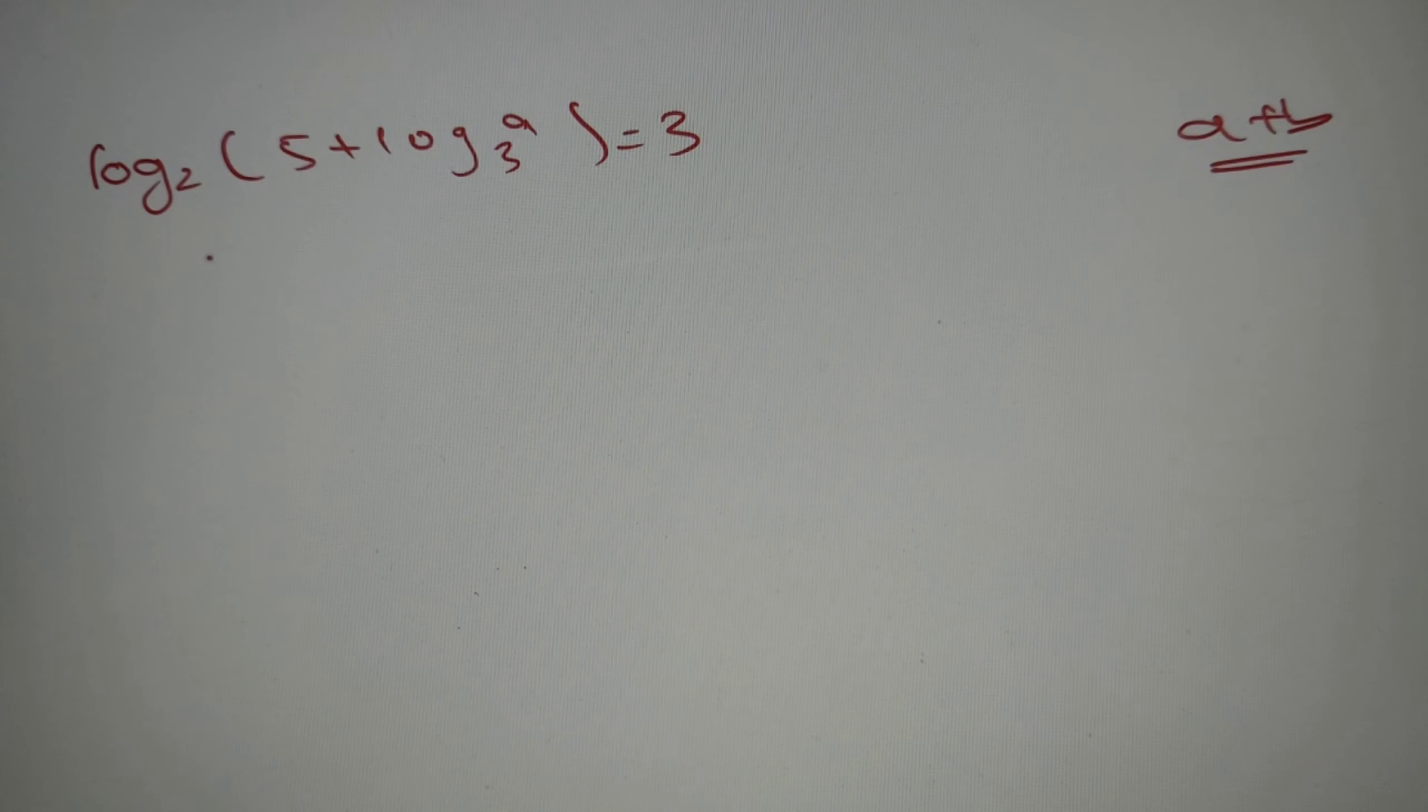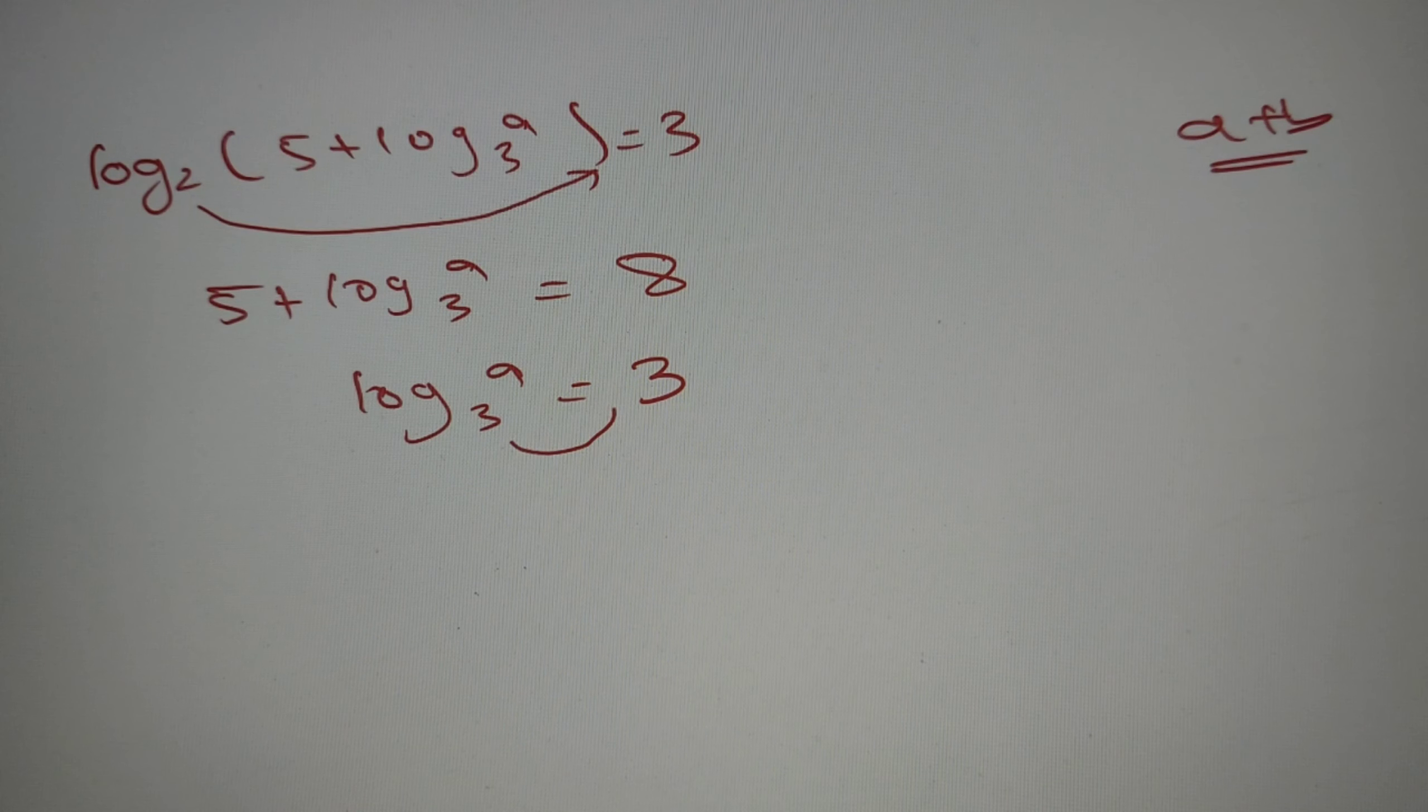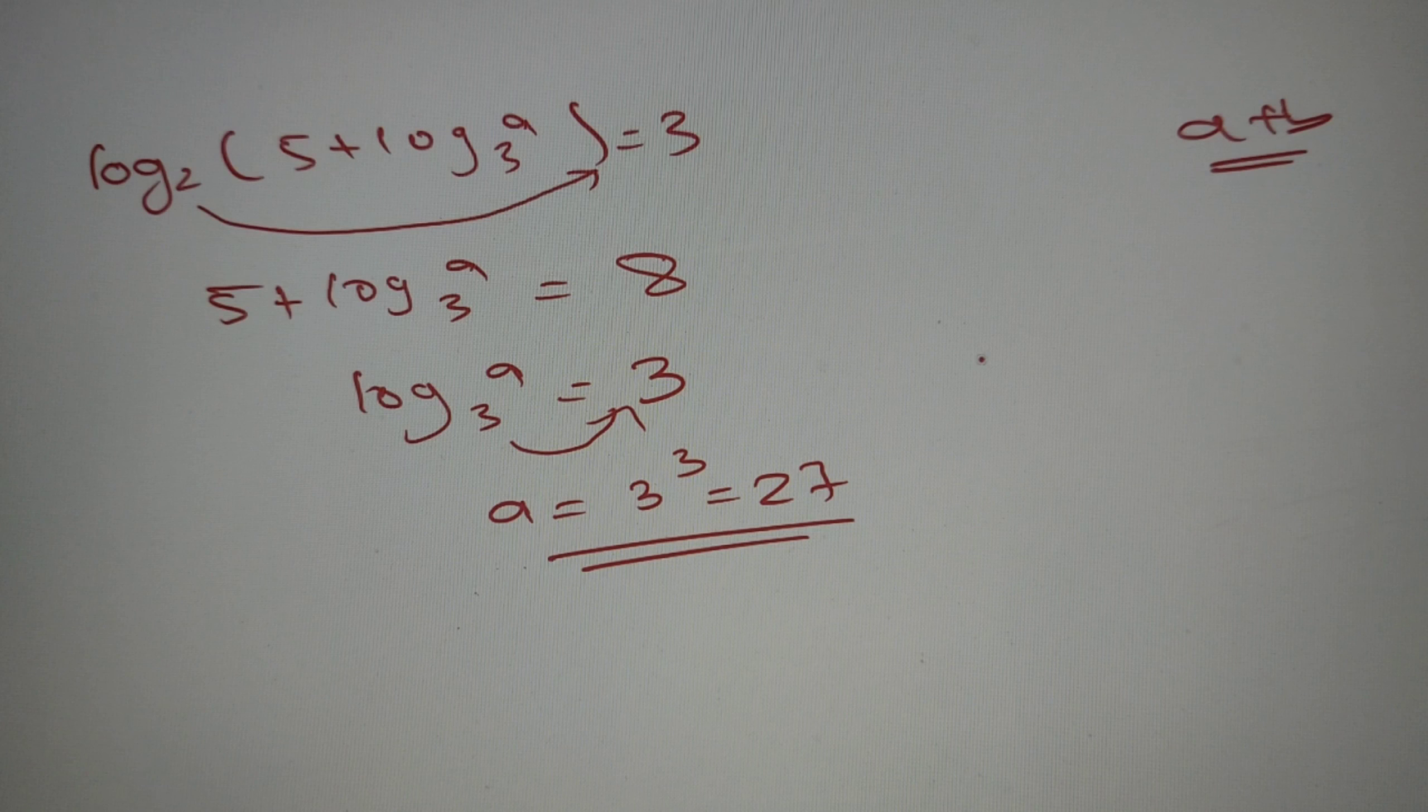If we solve this equation, we can say that 5 plus log base 3 of a equals 2 to the power 3, that is equal to 8. So we can say that log base 3 of a equals 8 minus 5, that is equal to 3, and again this 3 can go over here. So we can say that a equals 3 to the power 3, that is equal to 27. We have simply found the value of a as 27.